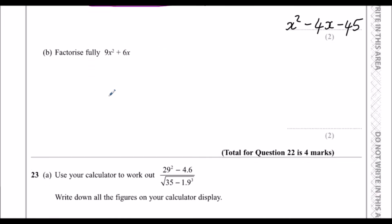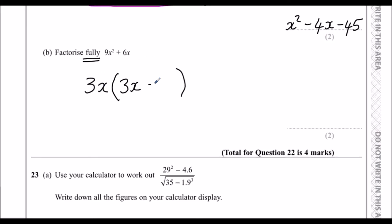Part b: factorise fully 9x² + 6x. Both terms are in the 3 times table, so we can take out 3. Both terms also have an x, so we can take out an x. Taking out 3x: 3x times 3x gives 9x², and 3x times 2 gives 6x. The fully factorised answer is 3x(3x + 2).